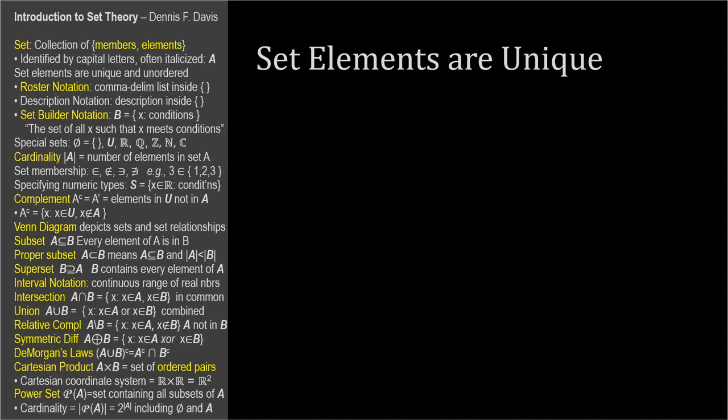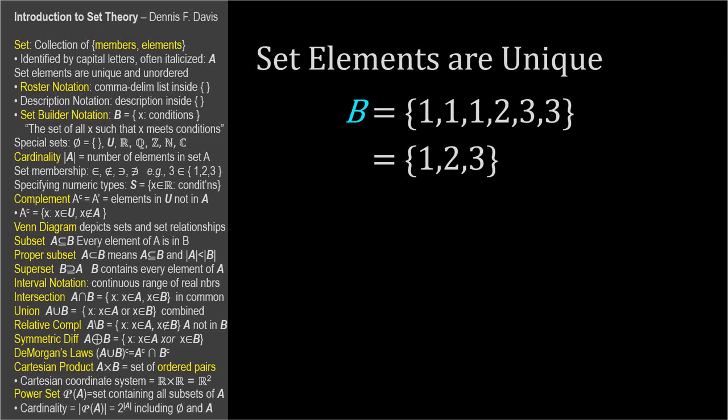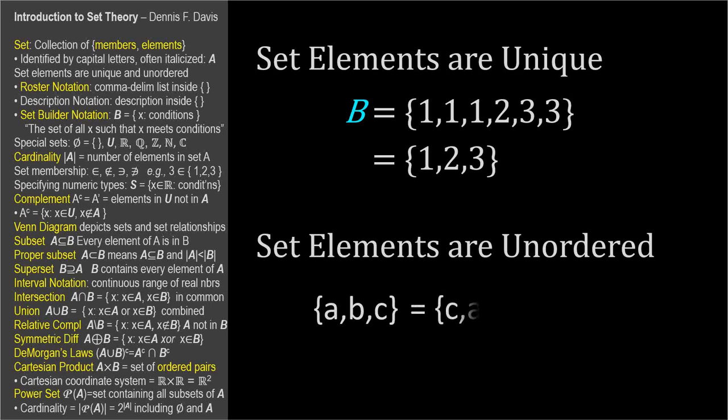Set elements are unique. No element is considered to be part of a set more than once. Every element is either in the set or not, so listing an element more than once is meaningless. So the set 1, 1, 1, 2, 3, 3 is actually the set 1, 2, 3. Additionally, set elements are unordered, so the set ABC is equal to the set CAB, which are both equal to set BCA, and so on. A set is a collection of objects with no implied order. When sets consist of numbers, we usually list them in order to make the membership clear, but the set itself is the collection of elements, and not their sequence.